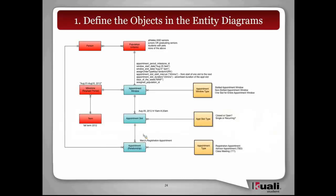I'm going to drill down in more detail. This is just an example of the entity diagram from the appointment window. I'm not going to describe the whole diagram, but you can see we have appointment window and appointment window type. Our coloring scheme is: blue for the main objects, yellowish for the type objects, and red for objects related to this service but not in this service. We start listing what we think might be in those type slots — what are we really talking about when we say appointment window type?